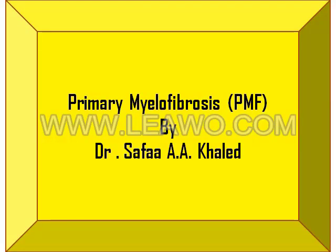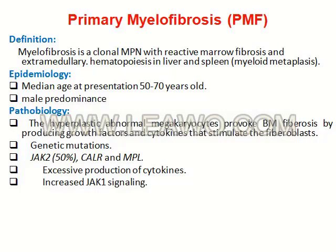The last disease today is primary myelofibrosis, a clonal myeloproliferative neoplasm with reactive marrow fibrosis and extramedullary hematopoiesis in the liver and spleen. Median age at presentation is 50 to 70 years with male predominance. The hyperplastic abnormal megakaryocytes provoke fibrosis by producing growth factors and cytokines that stimulate fibroblasts — this is the main pathobiology of primary myelofibrosis. JAK2 mutation and other genetic mutations also play a role.